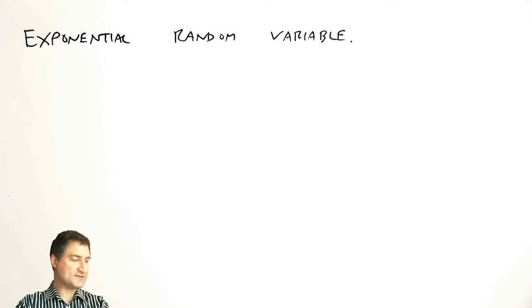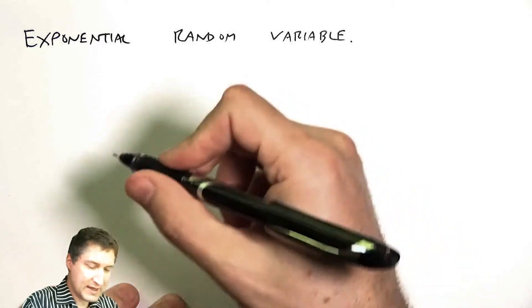This comes up a lot in the context of things like how long does a device last, or what is the time between arrivals of packets, or how long do you have to wait in line at the bank before you get service. So these kinds of queuing and networking problems, you see exponential random variables all the time.